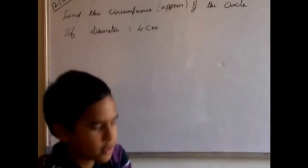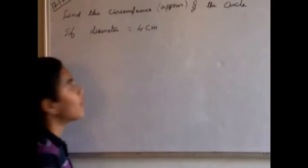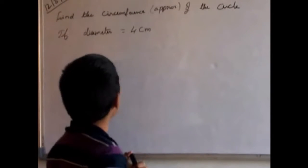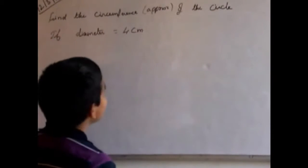Today's problem is how to find the circumference approximately of the circle if diameter is 4 cm.